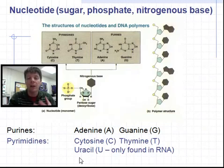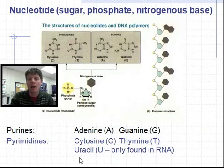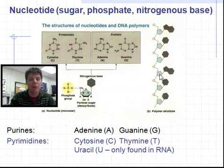There is another nitrogenous base you need to know about — it's called uracil, and it's found in RNA. Other things about RNA: we have a different sugar, ribose, which is very similar in structure to deoxyribose with just a few modifications. And RNA is a single-stranded molecule.